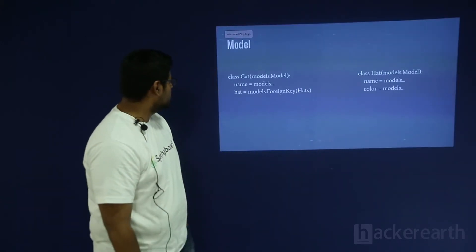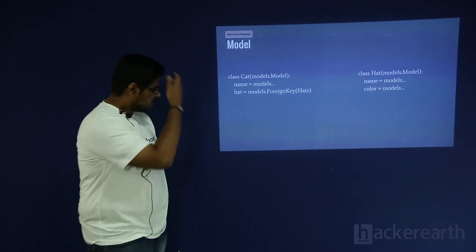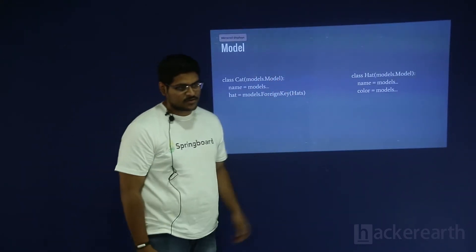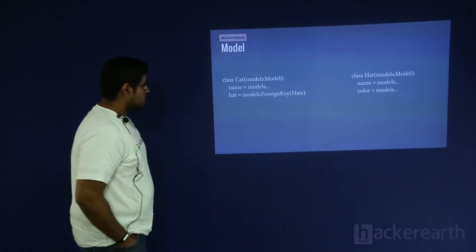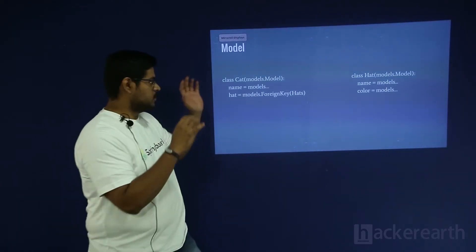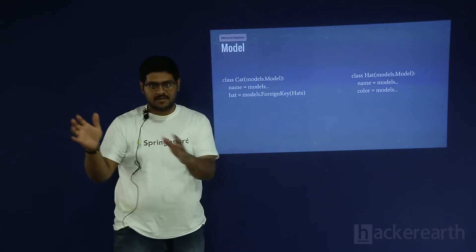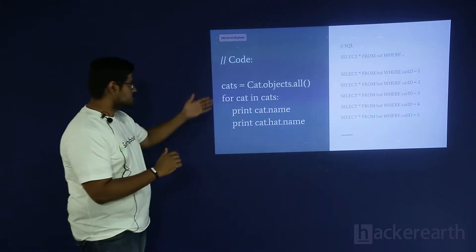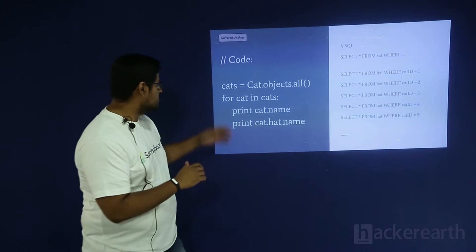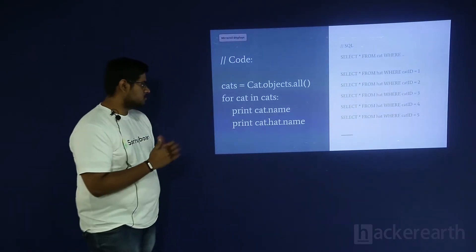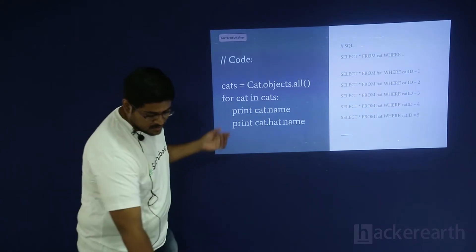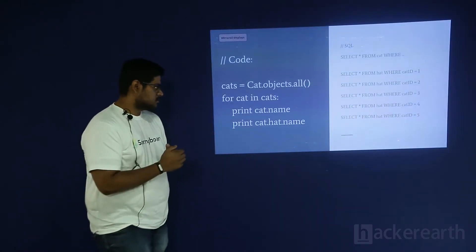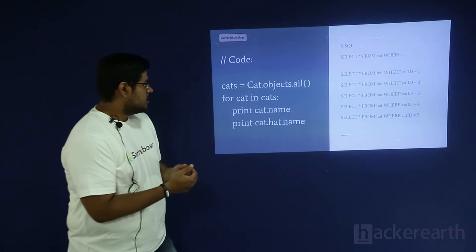Let's see what the problem is about. Let's say I have a model Cat. The cat has a name, a type, breed, BMI, and it is wearing a hat — there are different kinds of hats so there is a separate model for that. Now I want to do something simple: print the cat type and the type of hat it is wearing. So I would do a Django lookup on the queryset — get all the cats, loop over it, print cat.name and cat.hat.name. Note that hat is a foreign key to the hat model.